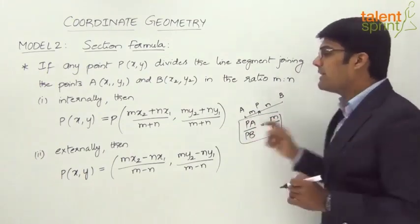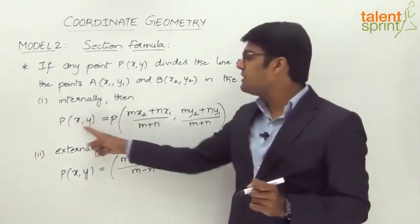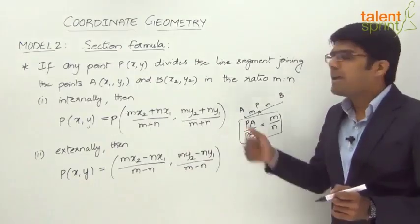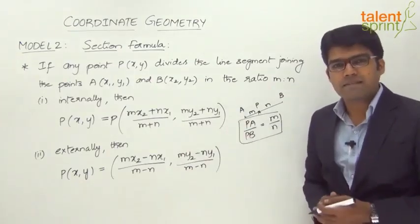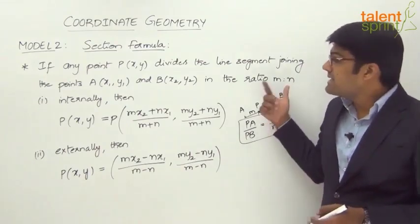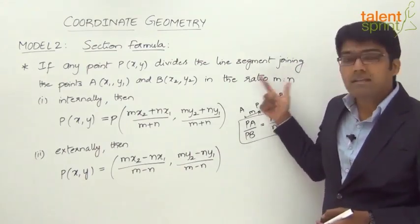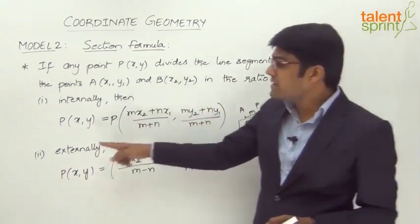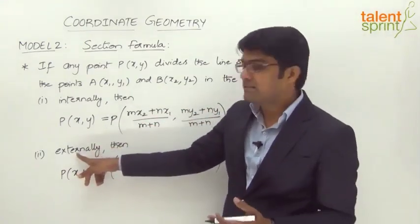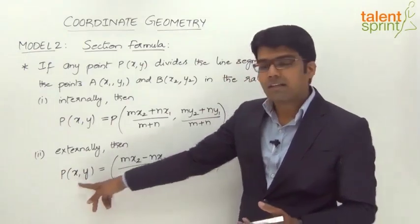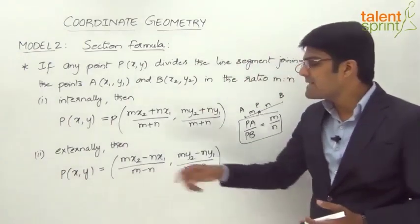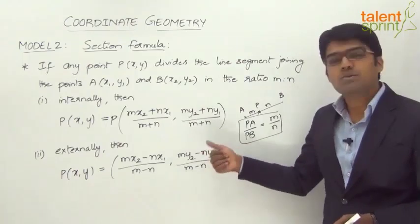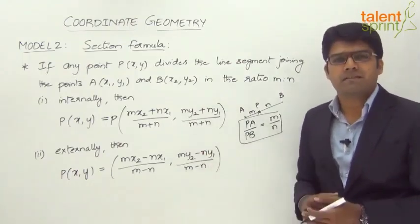And in the case where P divides the line segment joining the two points in the ratio m is to n externally, then the coordinates of P can be calculated as (mx2 − nx1)/(m − n) and (my2 − ny1)/(m − n).